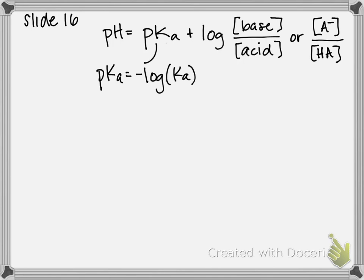We're given the concentration of our base or A minus species, the concentration of our acid or HA species, and we know the Ka. That's all we need to calculate pH.